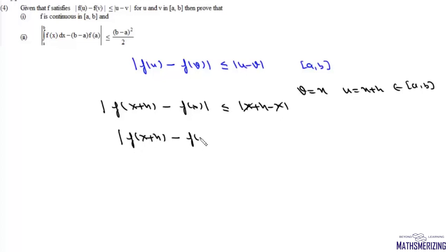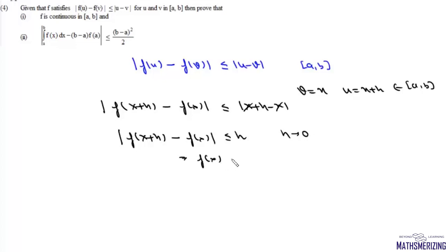So |f(x + h) - f(x)| will always be less than or equal to |h|, where h is nearly zero. From here we can say the function f(x) is continuous at all x lying in the interval [a, b].